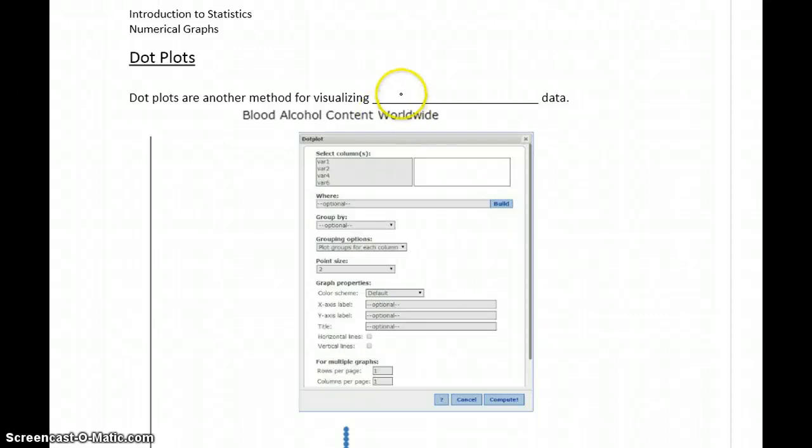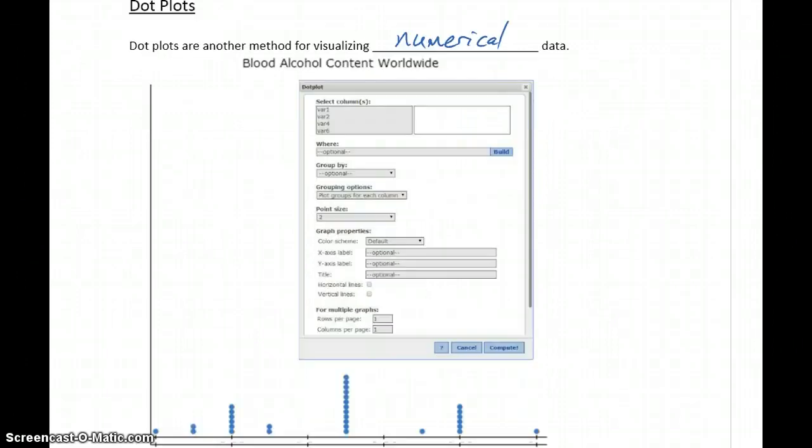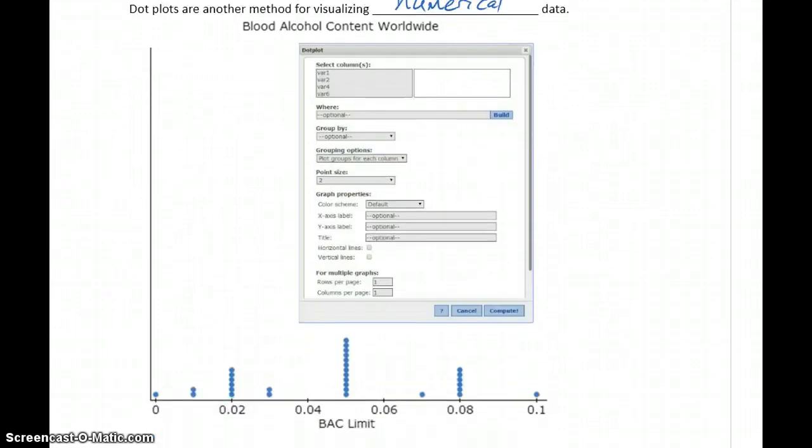Another type of graph for visualizing numerical data is a dot plot. A dot plot is significantly simpler than a histogram, and it comes down to whatever your data is, every number is referenced along the bottom, and we just put a dot every time a data value occurs that corresponds to that number.